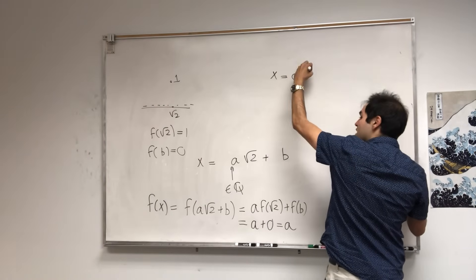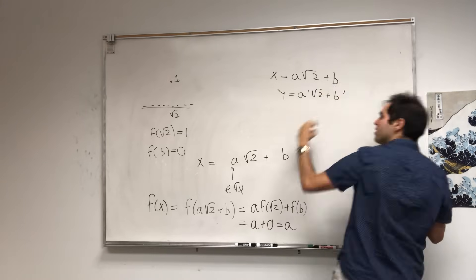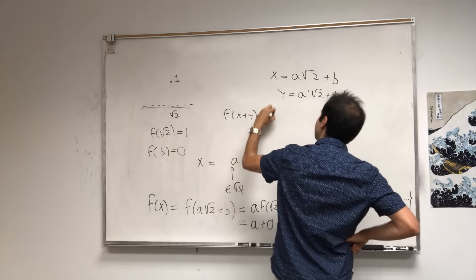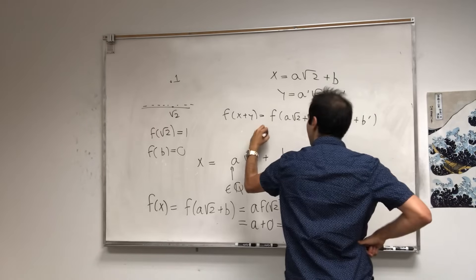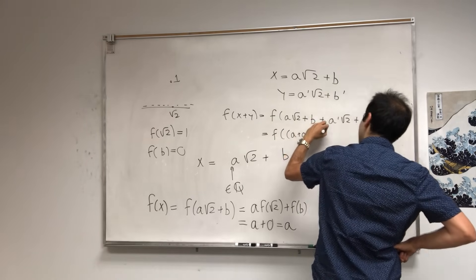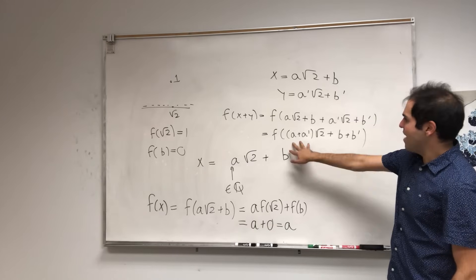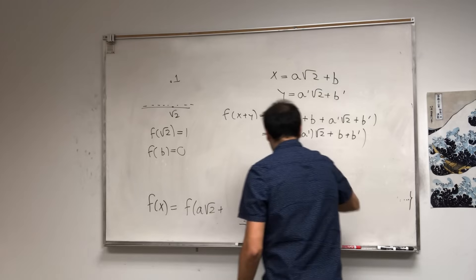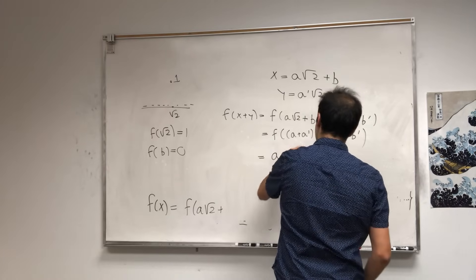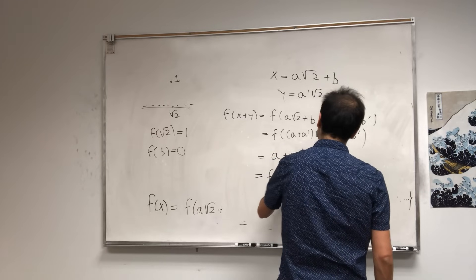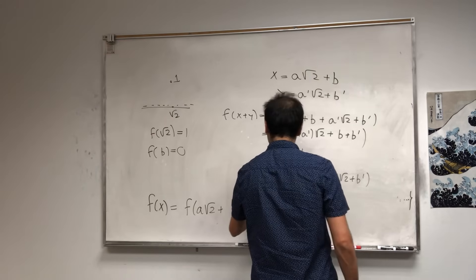I'm claiming this weird f satisfies additivity but is not linear. Additivity follows from f being a linear transformation, but let me verify explicitly. Suppose x = a·√2 + b and y = a'·√2 + b'. Then f(x+y) = f((a+a')·√2 + (b+b')) = a + a'. And f(x) + f(y) = a + a'. So indeed f(x+y) = f(x) + f(y). It is additive.